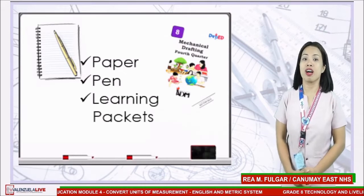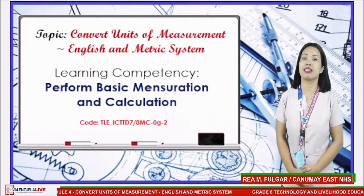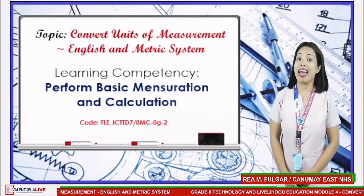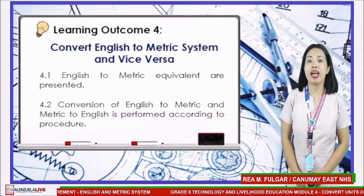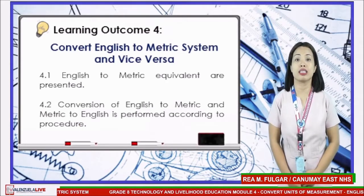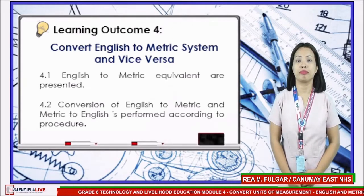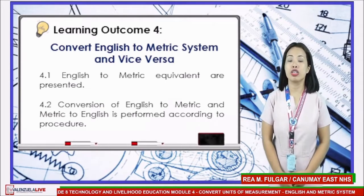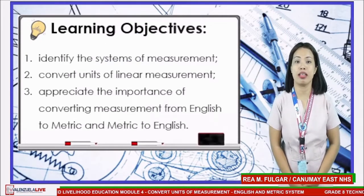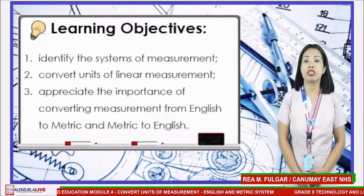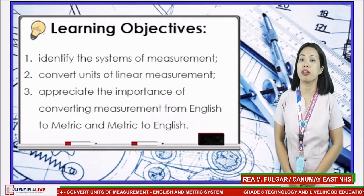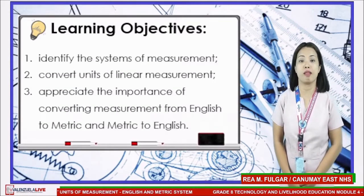To start, our learning competency is to perform basic mensuration and calculation. Under this competency, you are expected to convert English to metric system and metric to English system of measurements. At the end of the lesson, you should be able to: number 1, identify the system of measurement; number 2, convert units of linear measurement; and number 3, appreciate the importance of converting measurement from English to metric and metric to English.